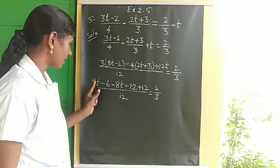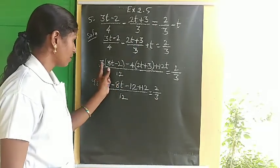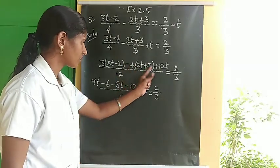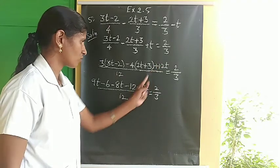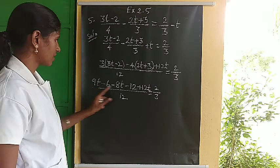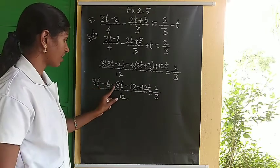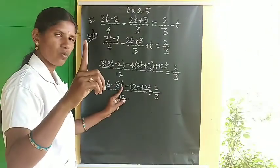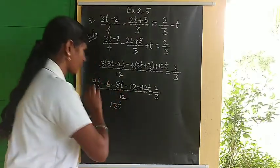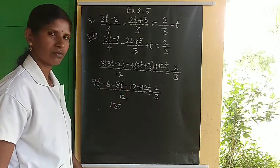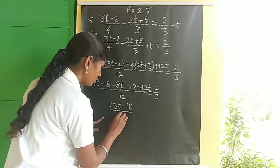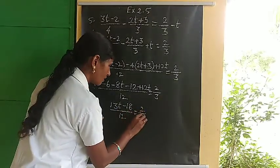So we have: 9t minus 6 minus 8t minus 12 plus 12t, all divided by 12, equals 2 by 3. Combining t terms: 9t minus 8t plus 12t gives 13t. Combining constants: minus 6 minus 12 gives minus 18. So we have 13t minus 18, divided by 12, equals 2 by 3.